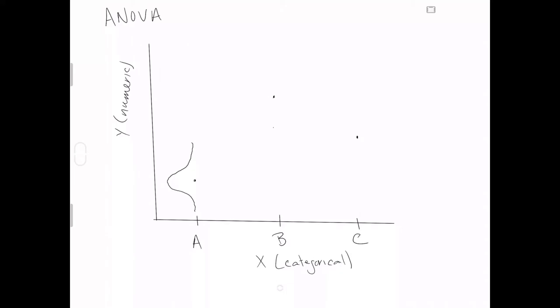Ideal continues to mean, in the world of ANOVA, that for each level we have normal data. So the first assumption of analysis of variance is normality — meaning the data within each level are approximately normal. This is usually just called 'normality.'